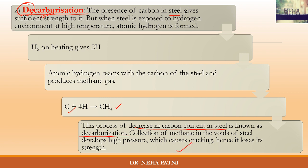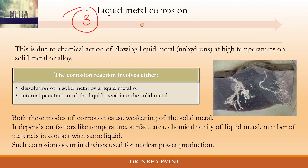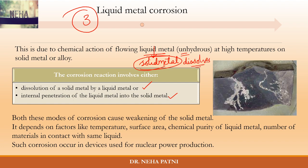The third type is liquid metal corrosion. The metal must be in liquid state and anhydrous — no moisture present. For example, when a pipe has liquid metal flowing through it, the liquid metal is in contact with the solid metal. The solid metal has two options: either it gets dissolved in the liquid metal, or the liquid metal penetrates into the solid metal. Both phenomena cause weakening of the solid metal. Examples include nuclear power production devices.